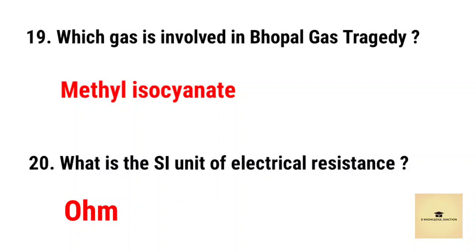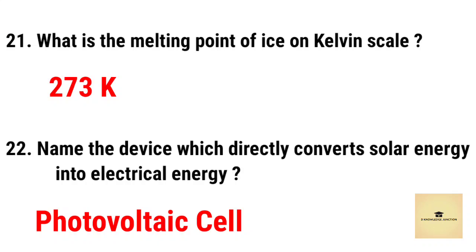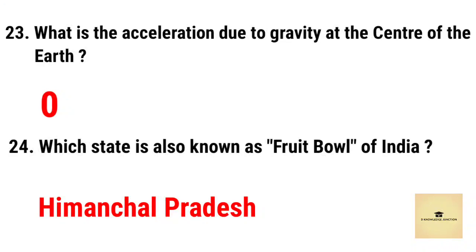What is the melting point of ice on the Kelvin scale? The right answer is 273 Kelvin. Next question: Name the device which directly converts solar energy into electrical energy. The right answer is a photovoltaic cell.